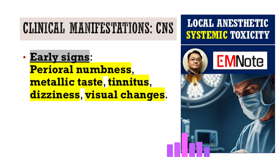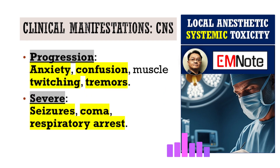Clinical presentations of LAST are highly variable and may not follow a sequential progression. Symptoms may involve the central nervous system, the cardiovascular system, or both. Central nervous system symptoms often precede cardiovascular symptoms. Early manifestations include perioral numbness, metallic taste, tinnitus, dizziness, and blurred or double vision. As toxicity progresses, anxiety, confusion, muscle twitching, and tremors develop. Severe toxicity may result in seizures, unconsciousness, and respiratory arrest.